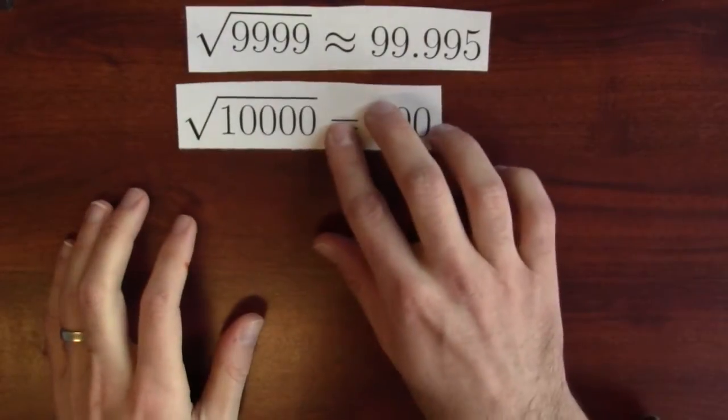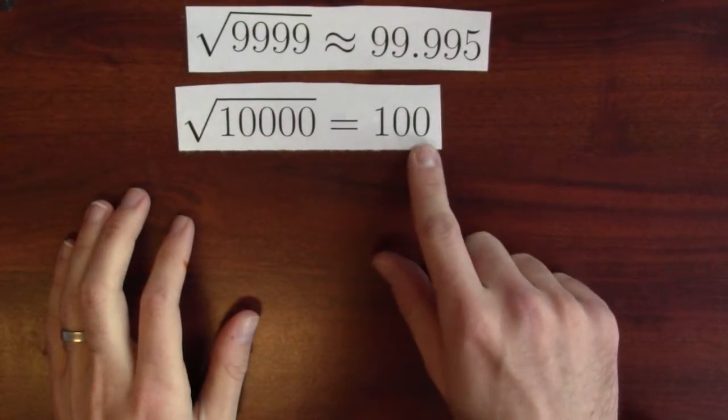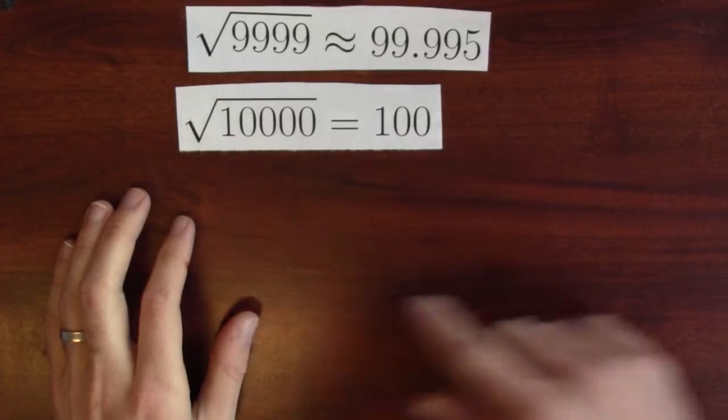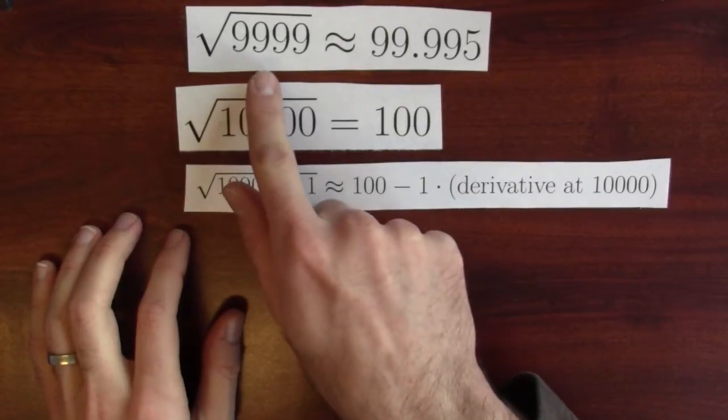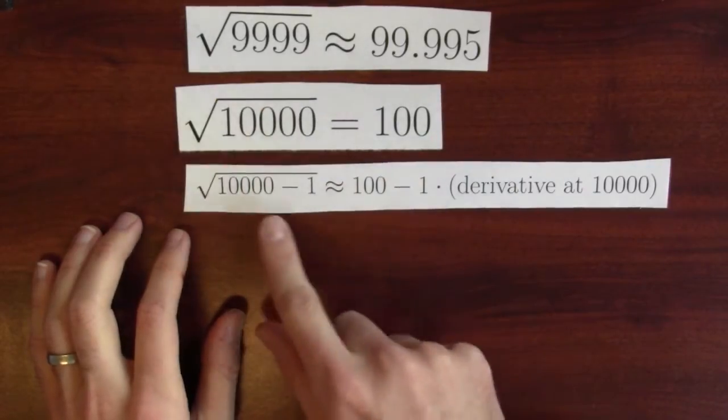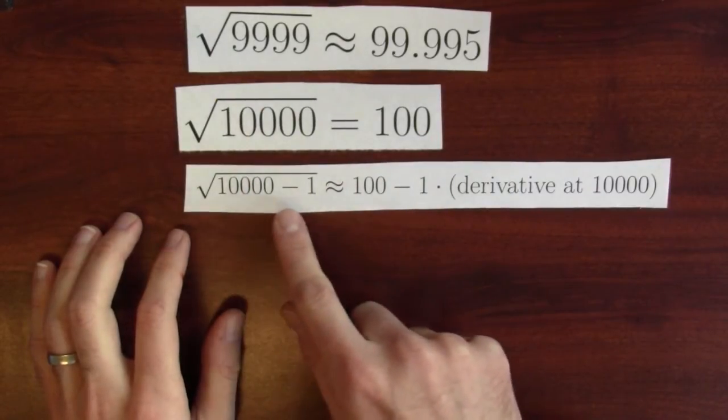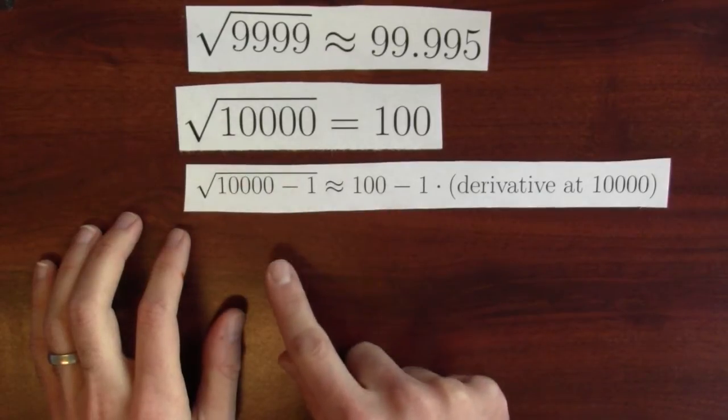This isn't a coincidence. Look, the square root of 10,000 is 100 because 100 squared is 10,000. What I'm really doing here is wiggling the input. I'm going from 10,000 to 9,999. In other words, I'm trying to calculate the square root of 10,000 minus 1.